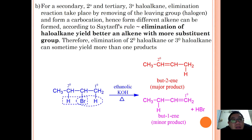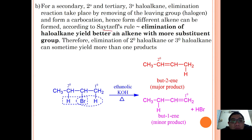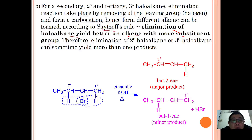For secondary or tertiary haloalkanes, elimination takes place by removing the leaving group halogen and forming a carbocation, allowing formation of different alkenes according to Zaitsev's rule. Zaitsev's rule states that elimination of the haloalkane yields the more substituted alkene — meaning the alkene with more substituent groups. Alternatively stated, the carbon bearing fewer hydrogens is preferably eliminated.